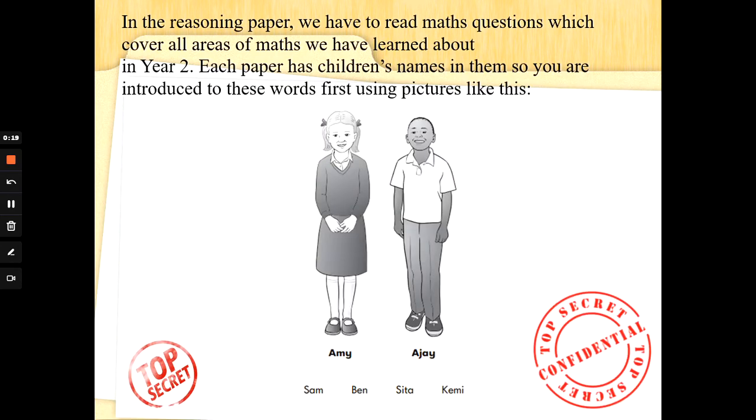In the reasoning paper we have to read maths questions which cover all areas of maths we have learned about in Year 2. The first page has always got a picture of some children along with some names on it. The paper uses children's names in the questions, so you're introduced to these words so you know what they mean. On this page the girl is called Amy, the boy is called AJ and we've got some other names along the bottom: Sam, Ben, Sita and Kemi. That means you may well see these names in any of the questions you read in the whole of the reasoning paper.